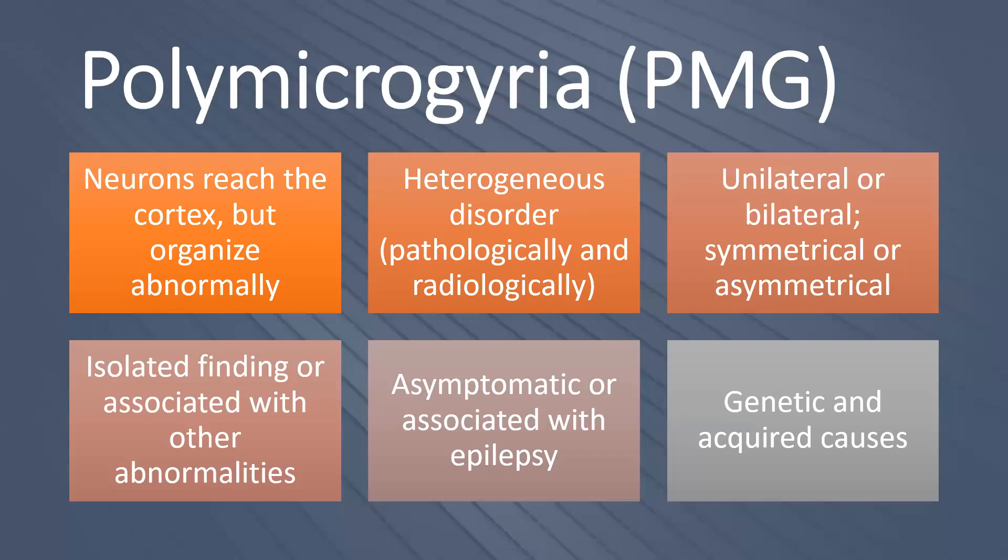Polymicrogyri is, just like focal cortical dysplasias, not one disorder but basically a heterogeneous group. It is a descriptive term that literally means too many, too small gyri. Both radiologically and pathologically it's a very diverse group. They all have in common that they are probably the result of neurons reaching the cortex but organizing abnormally there. The abnormality can be unilateral or bilateral, and when bilateral, it can be symmetrical or asymmetrical. The most frequent type is perisylvian polymicrogyri. Polymicrogyri can be the only finding or can be associated with other malformations.